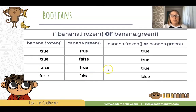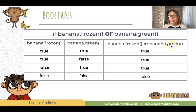Here's our table again, but this time with the OR Boolean operator: if banana frozen or banana green. You can see we have several true outcomes — several true conditions for banana frozen or banana green. When both are true, but also when only one is true, we still get a true condition.